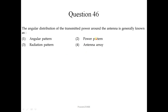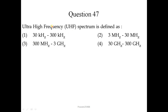Question number 46: The angular distribution of transmitted power around the antenna is generally known as the radiation pattern — correct option is 3. Question number 47: The ultra high frequency (UHF) spectrum is defined as the range from 300 MHz to 3 GHz — correct option is 3. Question number 48: The most basic antenna element is the Hertzian dipole, also known as the ideal dipole — correct option is 1.